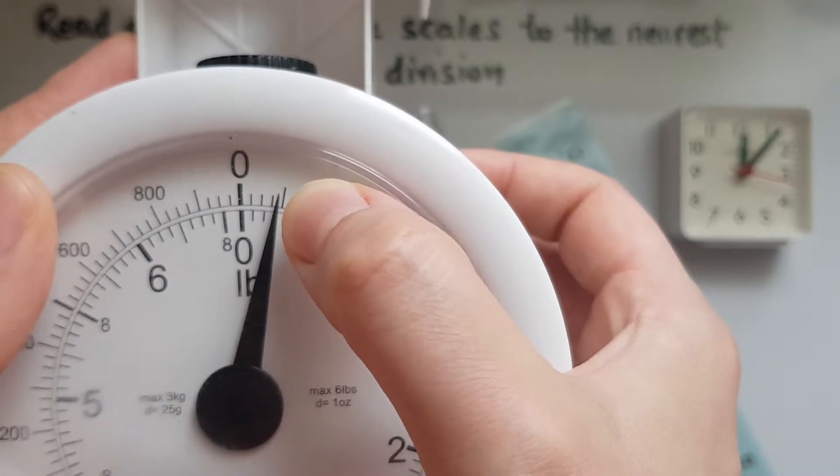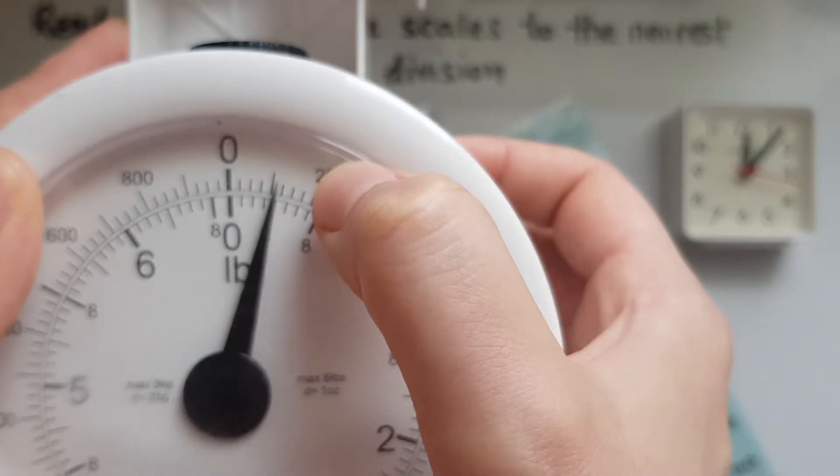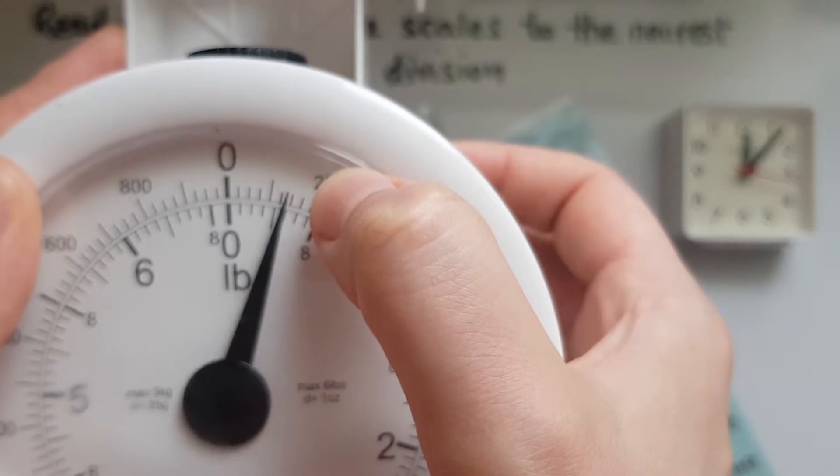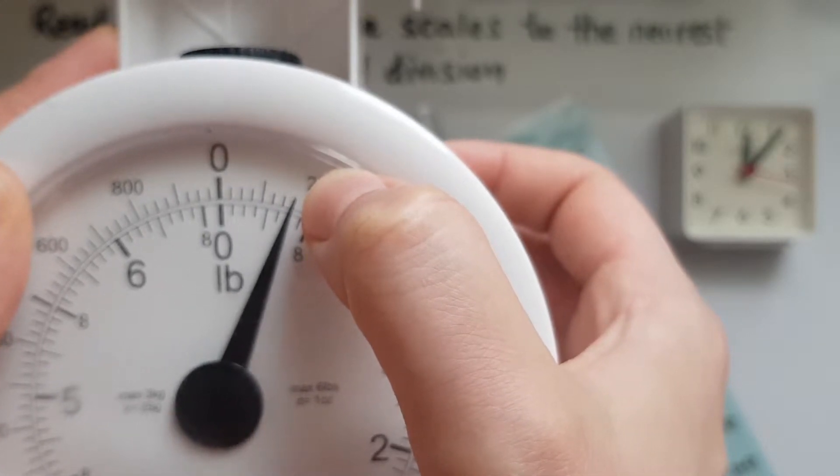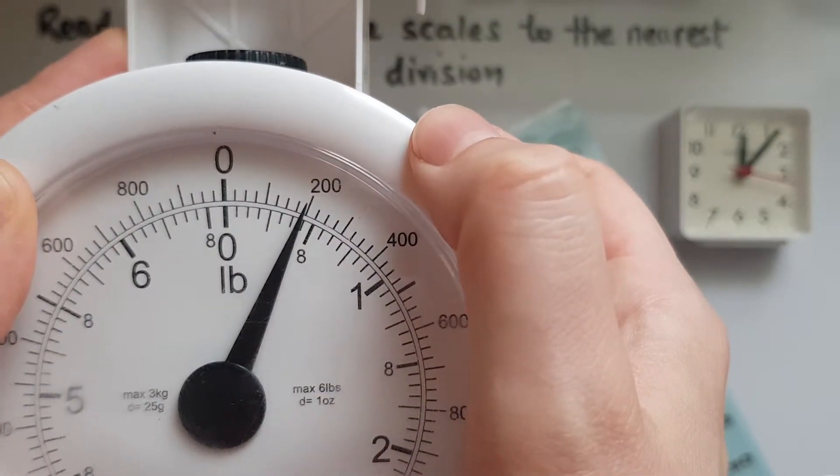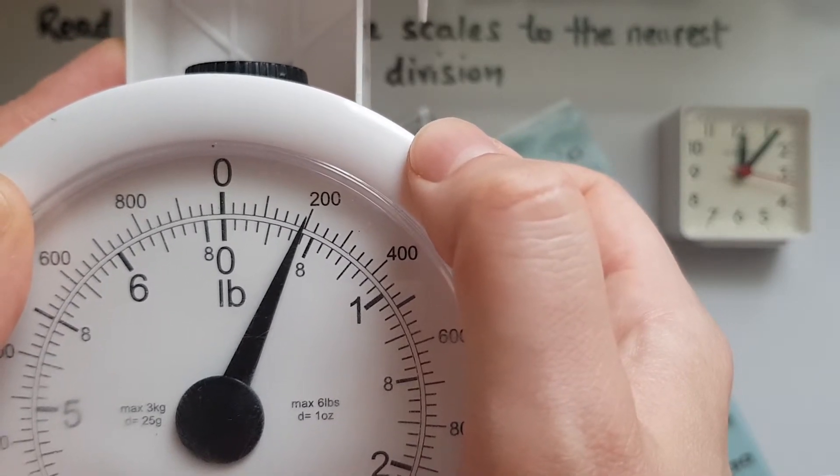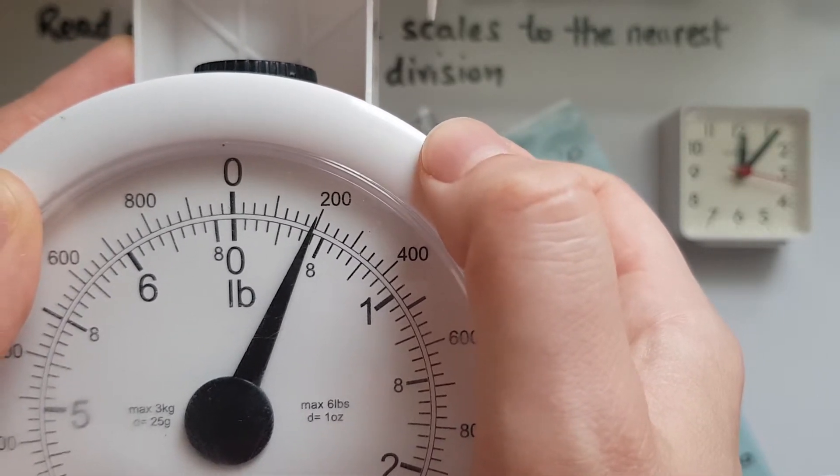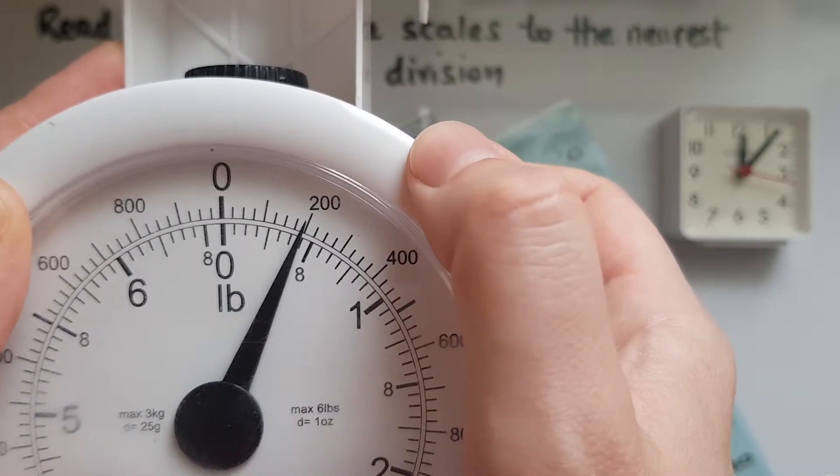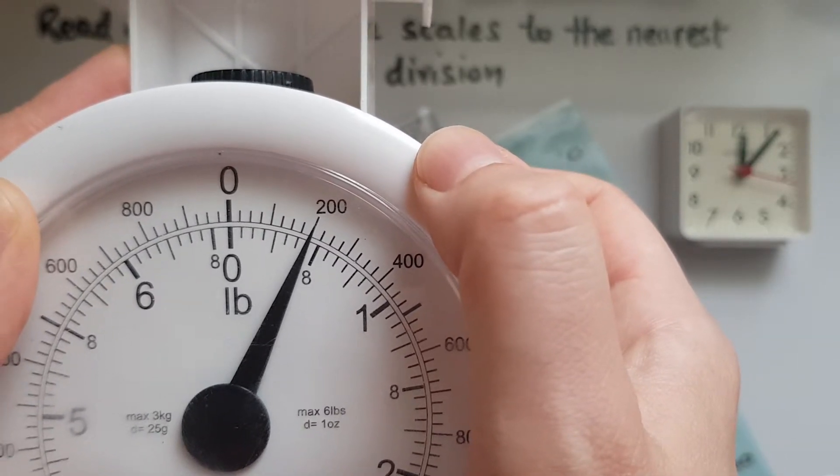125, 150, 175, 200. So that shows exactly how many grams in each division. So 25 in each small division.